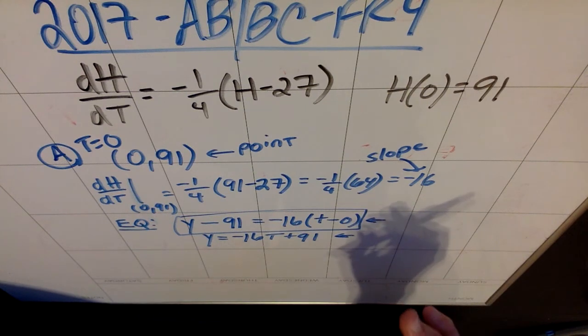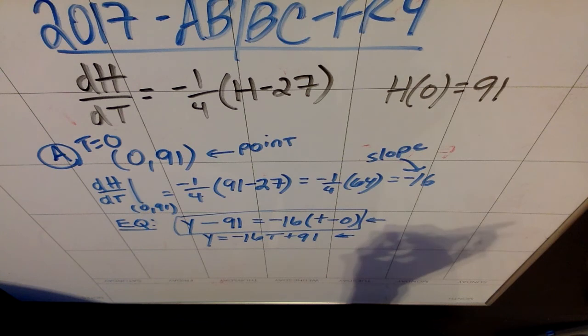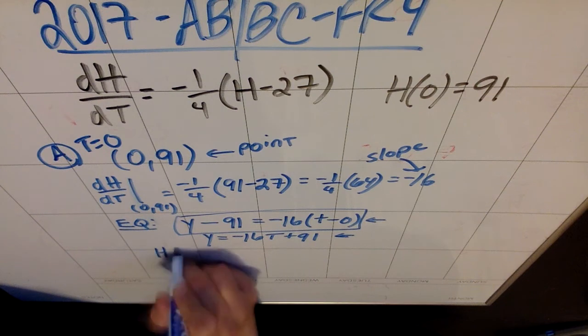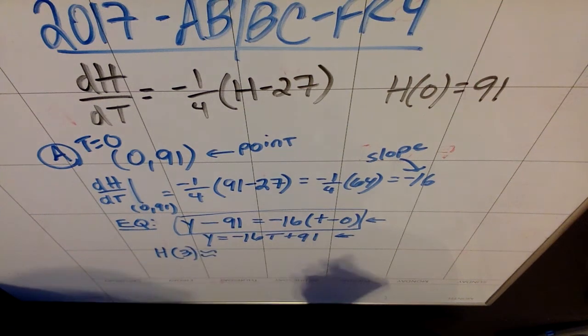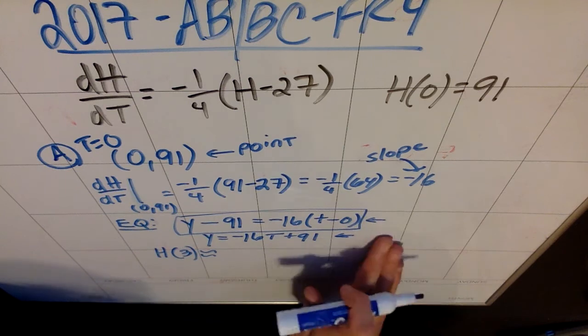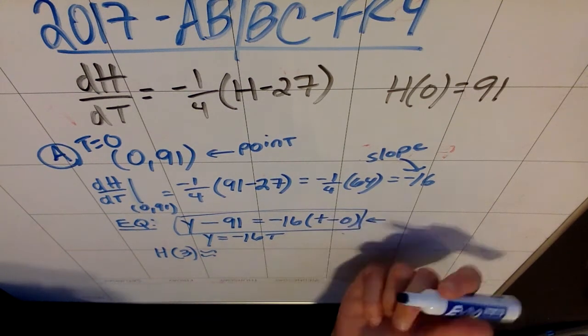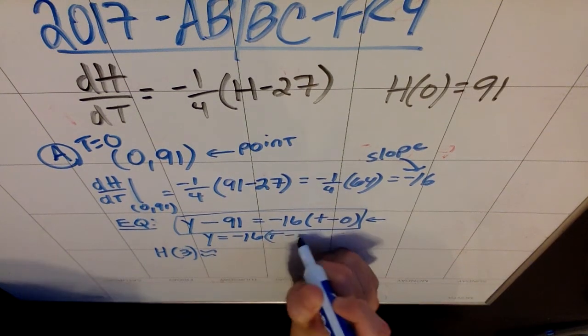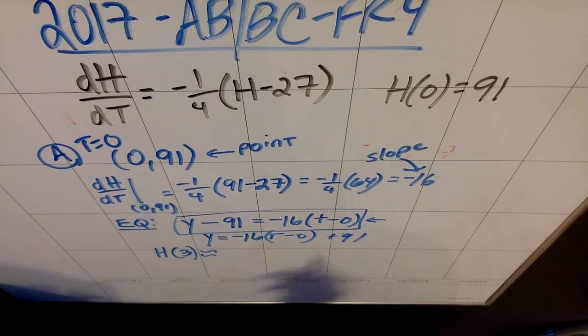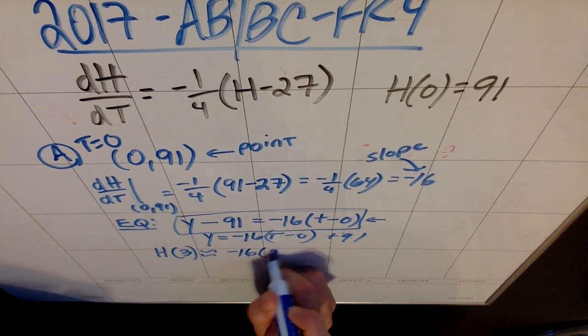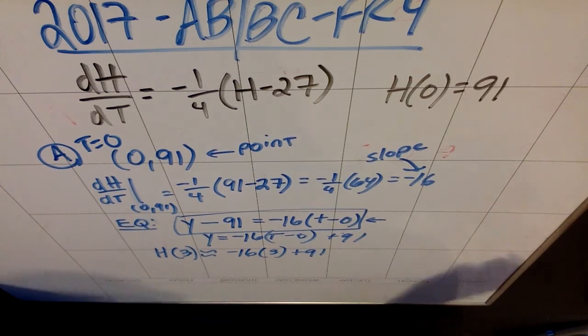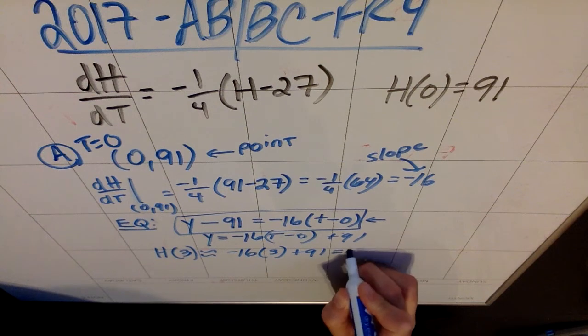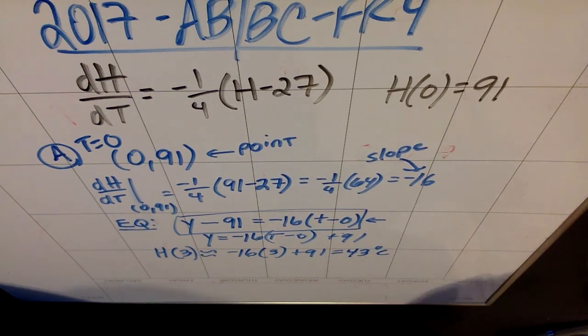Next part, they say use the equation to approximate the internal temperature when T is 3. Also, the lazy way to do this is to leave this as T minus whatever number's there, and then just add the 91 to the outside. So when I plug in 3, I get negative 16 times 3 plus 91. I end up getting that this is 43 degrees Celsius.